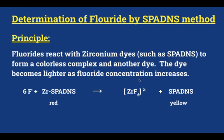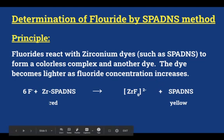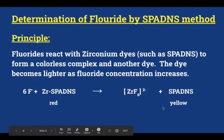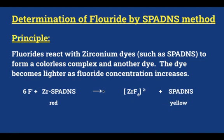Another dye becomes lighter as the fluoride concentration increases. Zirconyl SPADNS has a red color. When the water sample is treated with zirconyl SPADNS, the fluoride ions present in water react with this dye to form a hexafluoride complex and SPADNS, which has a yellow color. The intensity of color — the dye becomes lighter — as the fluoride concentration increases.